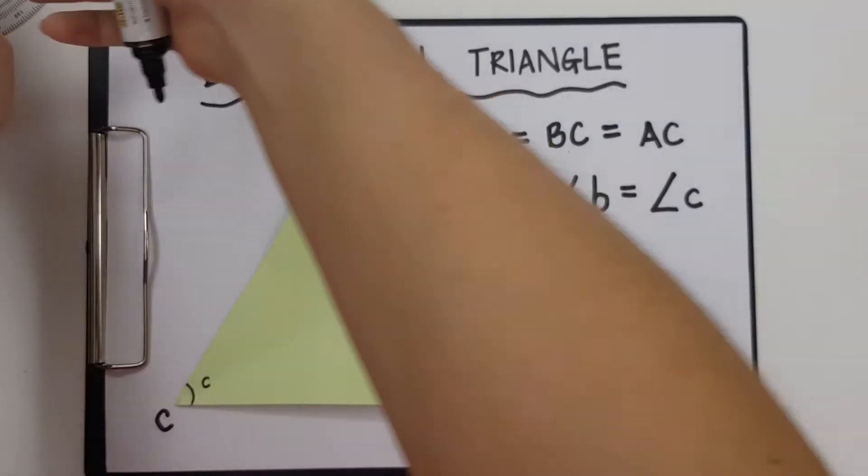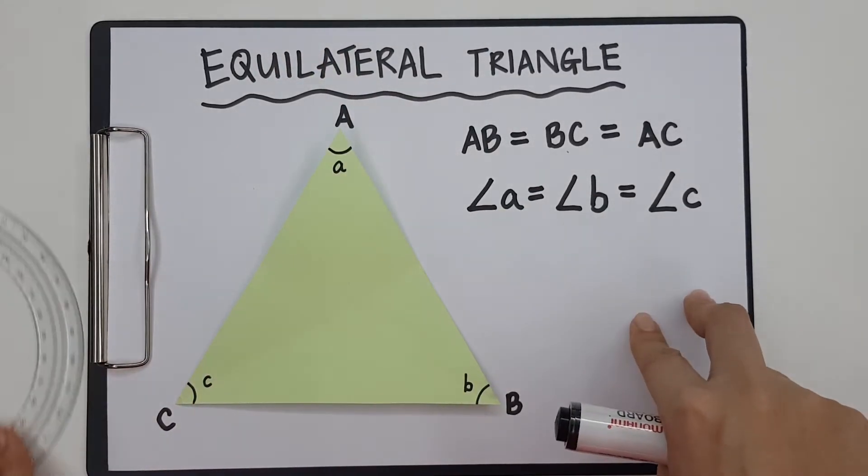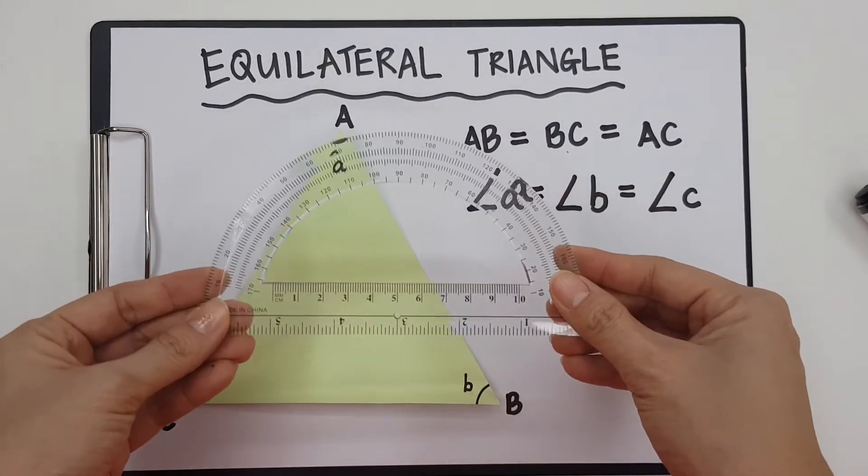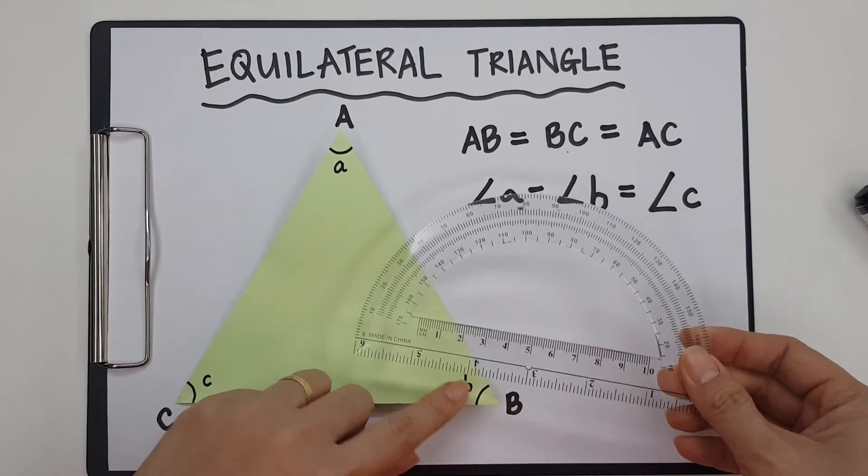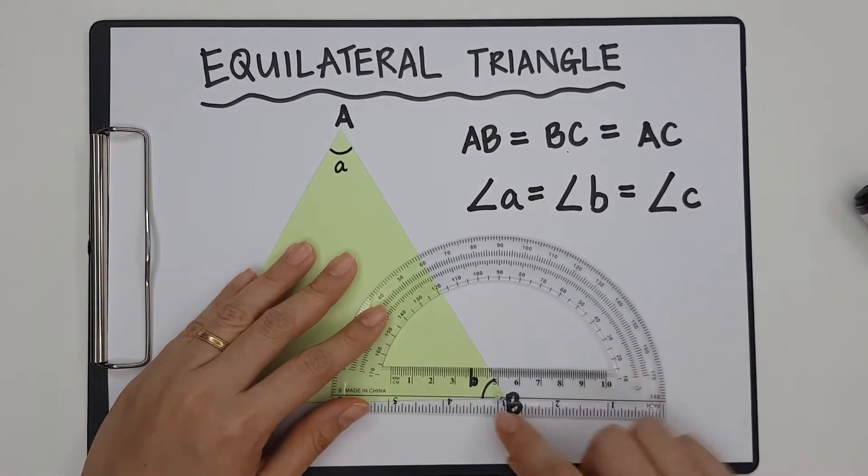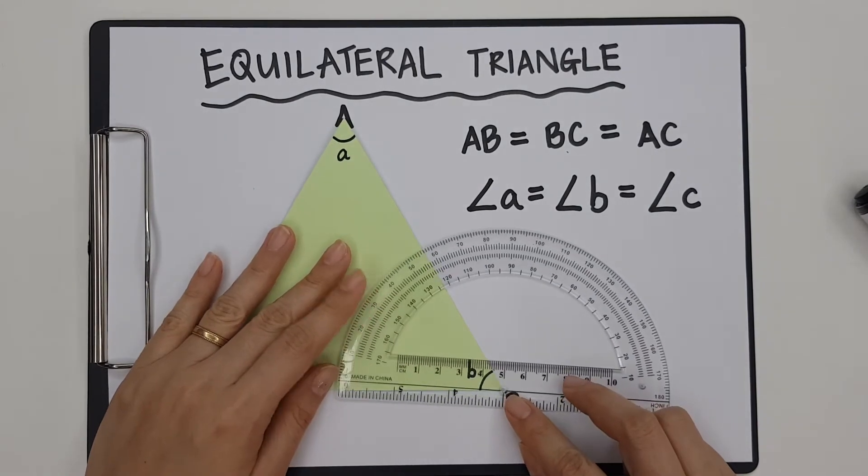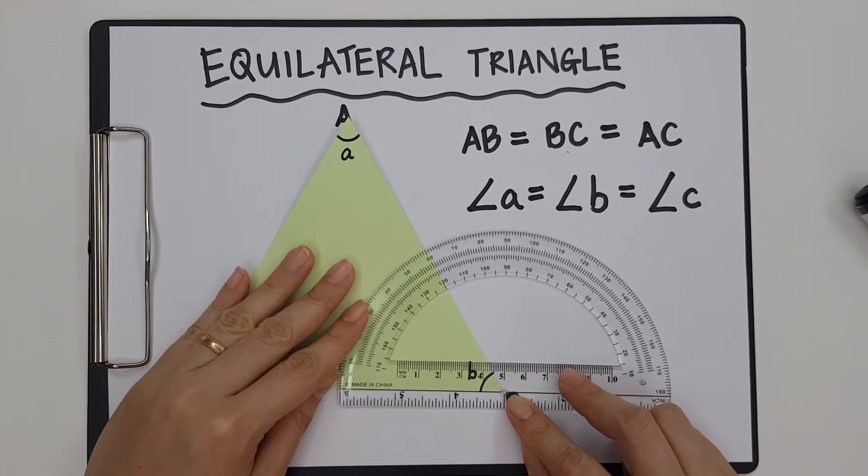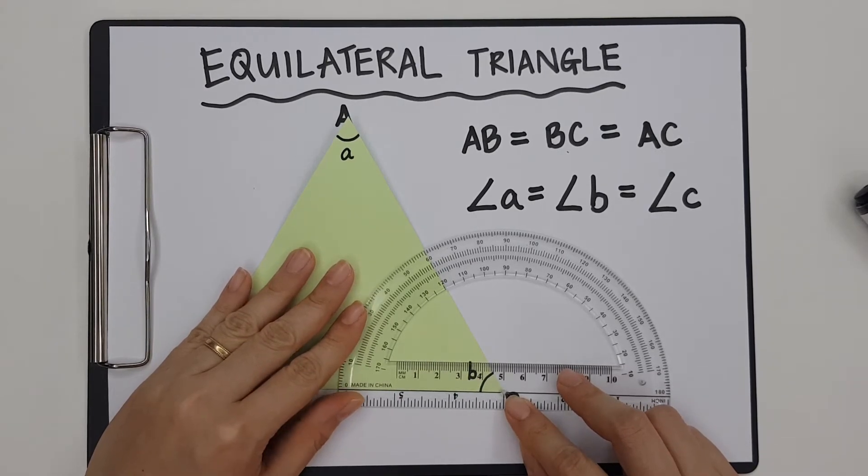Now, what is this special angle that we have in an equilateral triangle? We can always use our protractor to check. So I'm going to check angle B here. This is how we use a protractor. We put the point on the vertex and make sure our baseline is aligned.